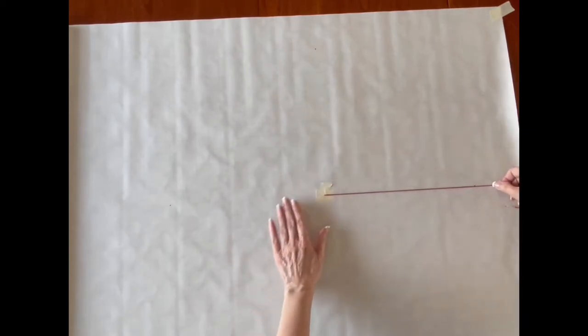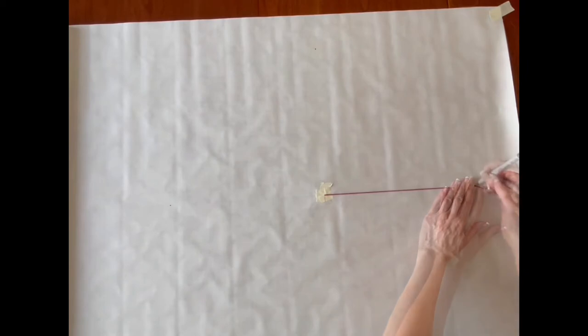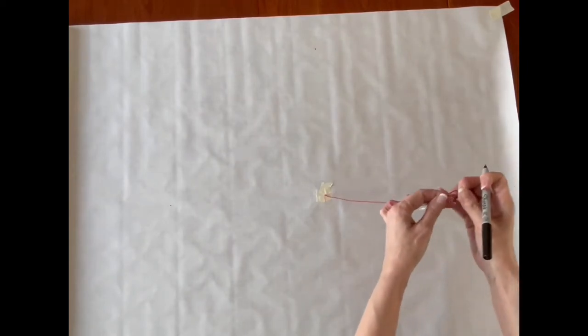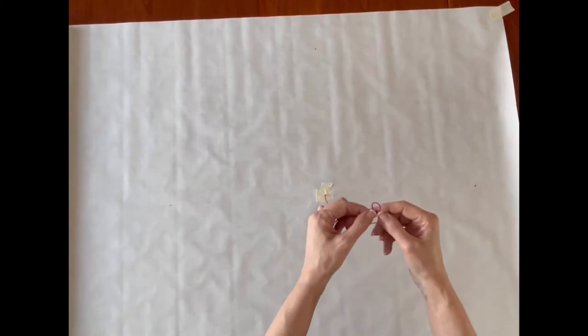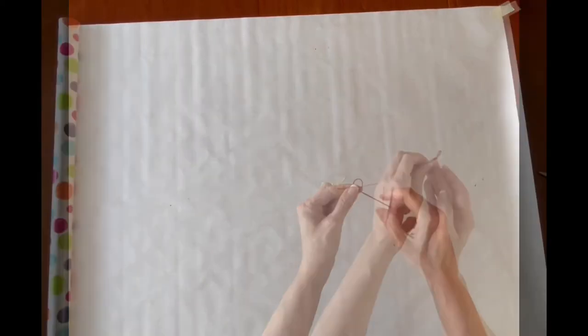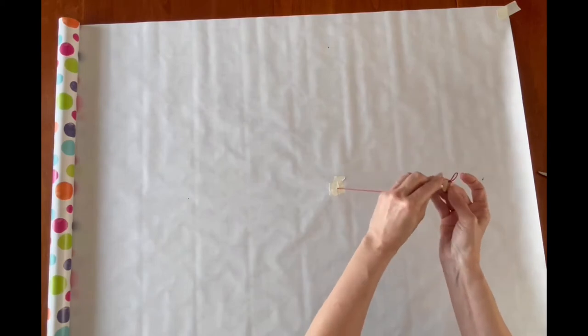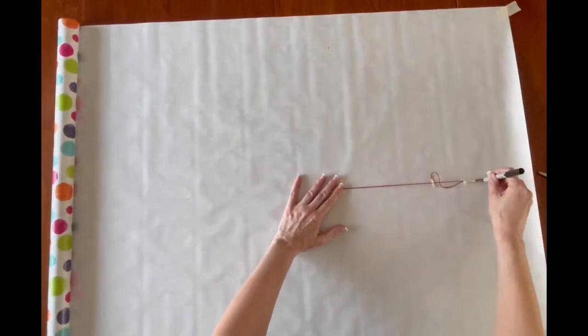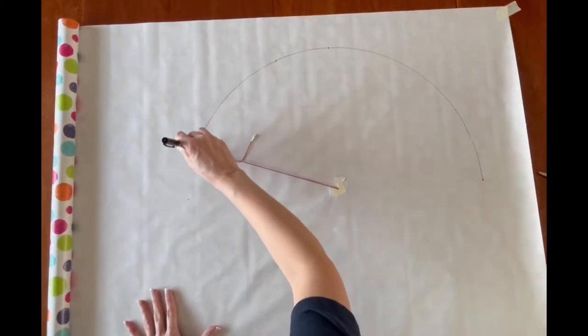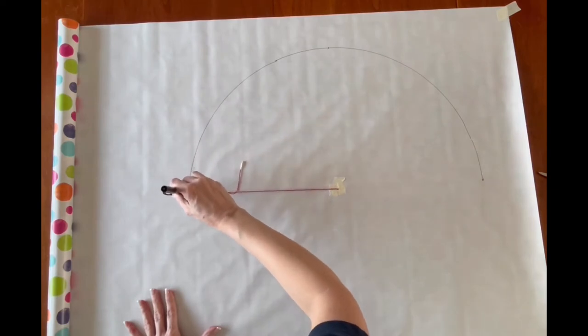With a pen or a marker, mark the twelve inch spot on the string. Make a loop on the end of the string where the mark is at the top. Secure it with a piece of tape. This will be twelve inches for your radius. Place a pen or a marker inside the loop and make your circle. This is essentially a homemade compass.